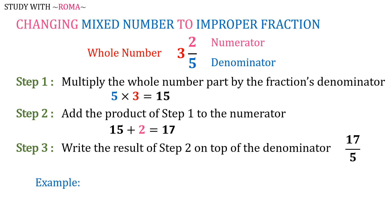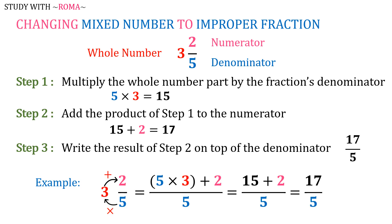Again, the solution is: 5 times 3 plus 2, all over 5, equals 15 plus 2 all over 5, which is equal to 17 over 5.